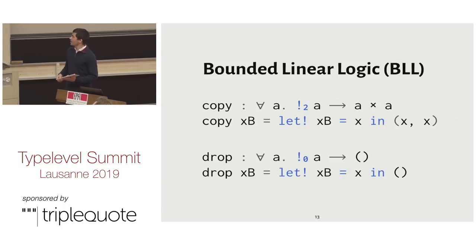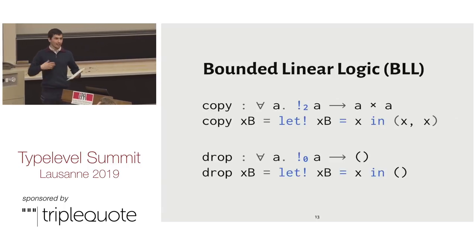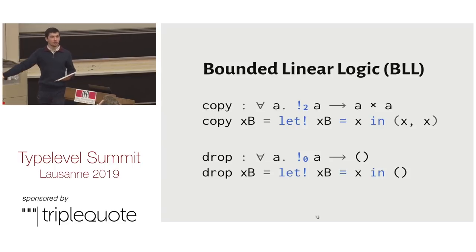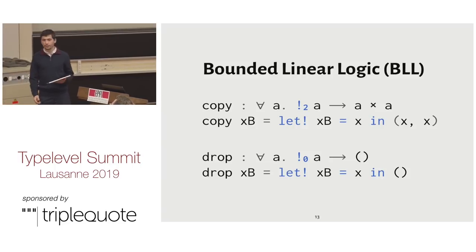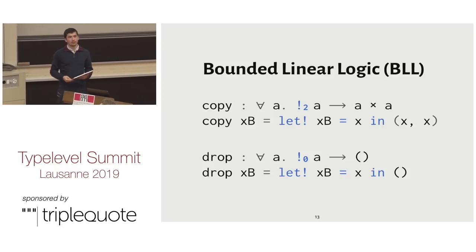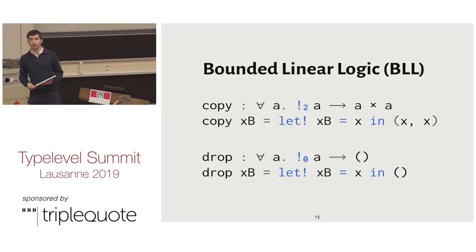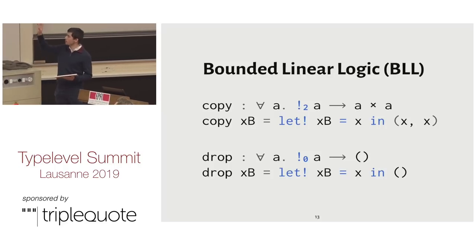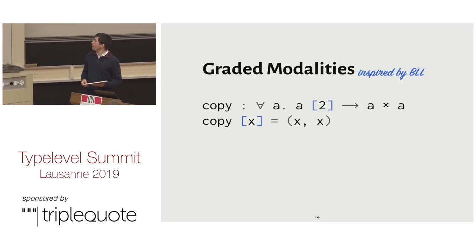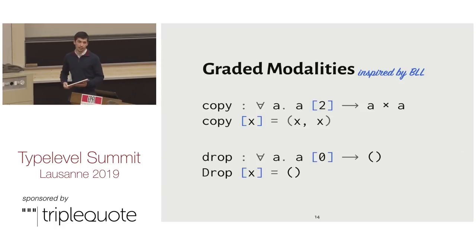Bounded linear logic is basically like linear logic but gives you more precise information. This function takes an A that is used at most twice. And drop takes an A that is used at most zero times. So you can now in the types distinguish between copy and drop. This is how it would look in Granule.